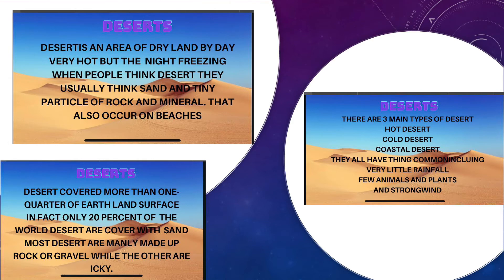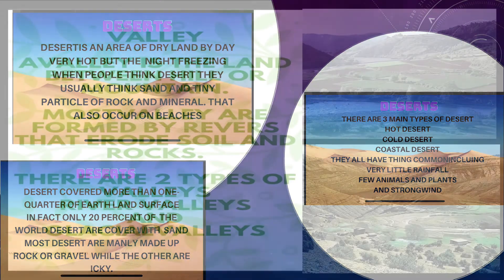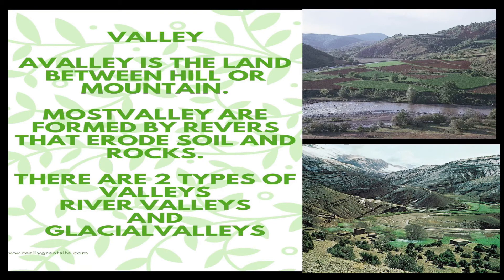There are three main types of deserts: hot deserts, cold deserts, and coastal deserts. They all have things in common, including very little rainfall, few animals and plants, and strong wind. A valley is the land between hills or mountains. Most valleys are formed by rivers that erode soil and rocks. There are two types of valley: river valleys and glacier valleys.